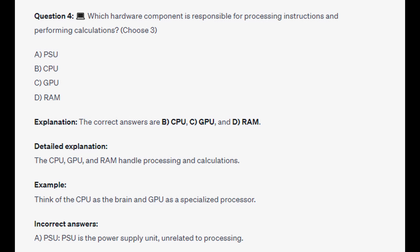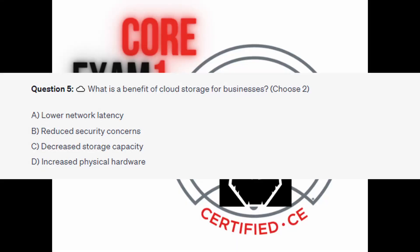The CPU, GPU and RAM handle processing and calculations. Think of CPU as the brain and GPU as a specialized processor. And for the incorrect answers: PSU is the power supply unit, unrelated to processing. And for the next question of our exam, question number 5. What is the benefit of cloud storage for businesses? Choose two.